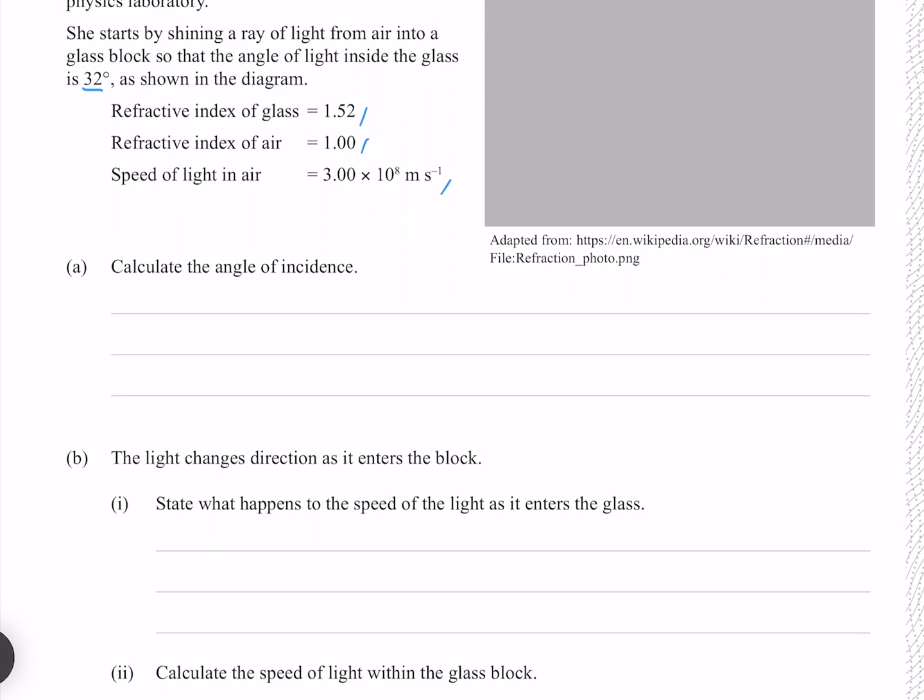We can describe refraction with Snell's law, where we can set n1 as our refractive index in air, which means that θ1 is what we're trying to find, our incident angle, n2 is our refractive index in glass, and 32 is our θ2.